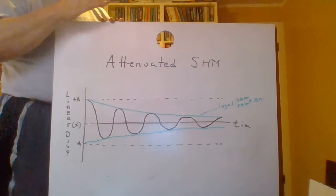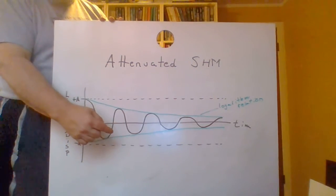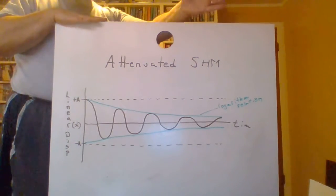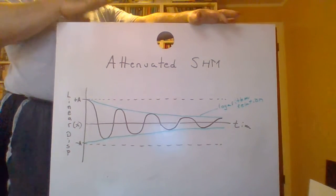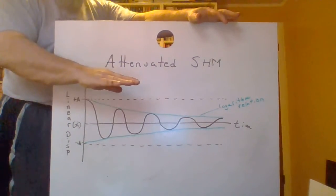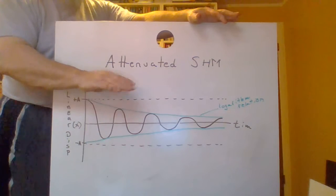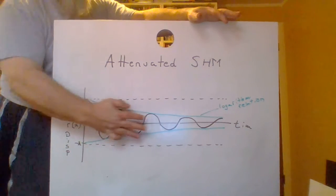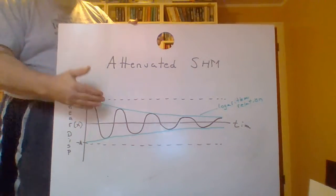If the non-conservative force is very strong, this can happen in less than one cycle — you could get to a point where it just goes down to the equilibrium point. That's a shock absorber in a car. They are specifically designed to damp the vibration of the wheel as it goes over a bump or into a pothole. It's designed to make it have less than one period — that's called over-damped. The graph shown earlier would be under-damped.